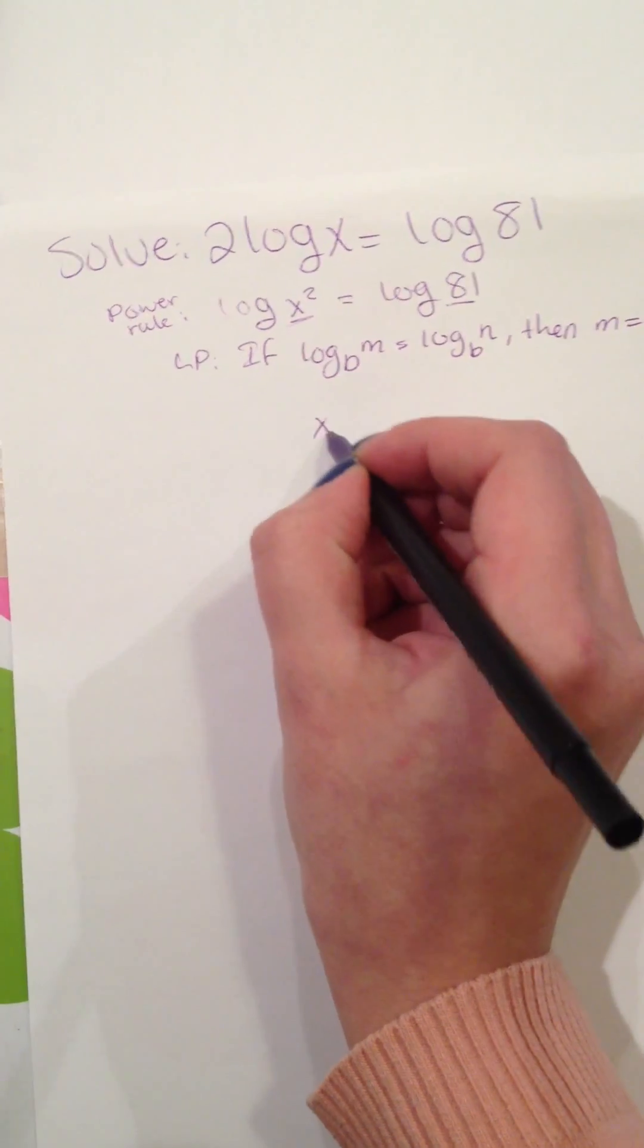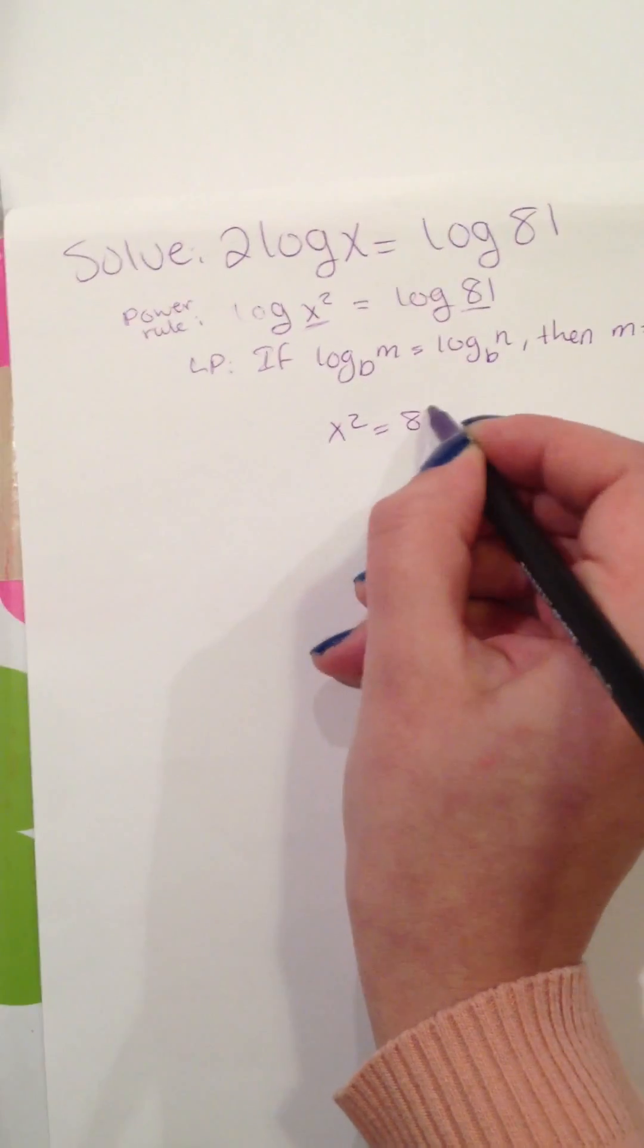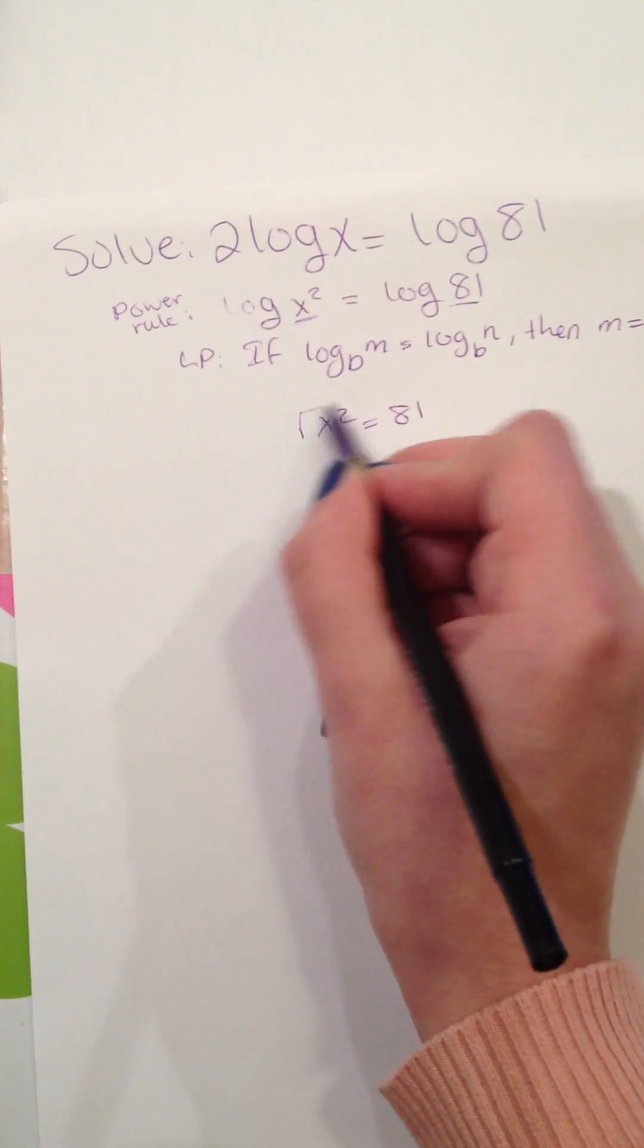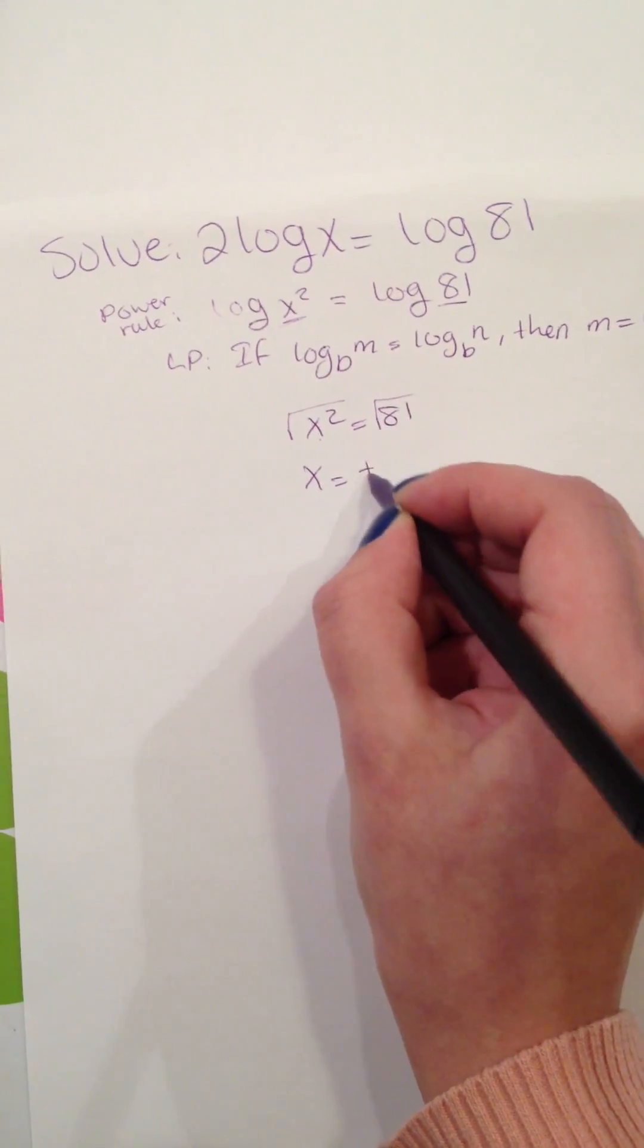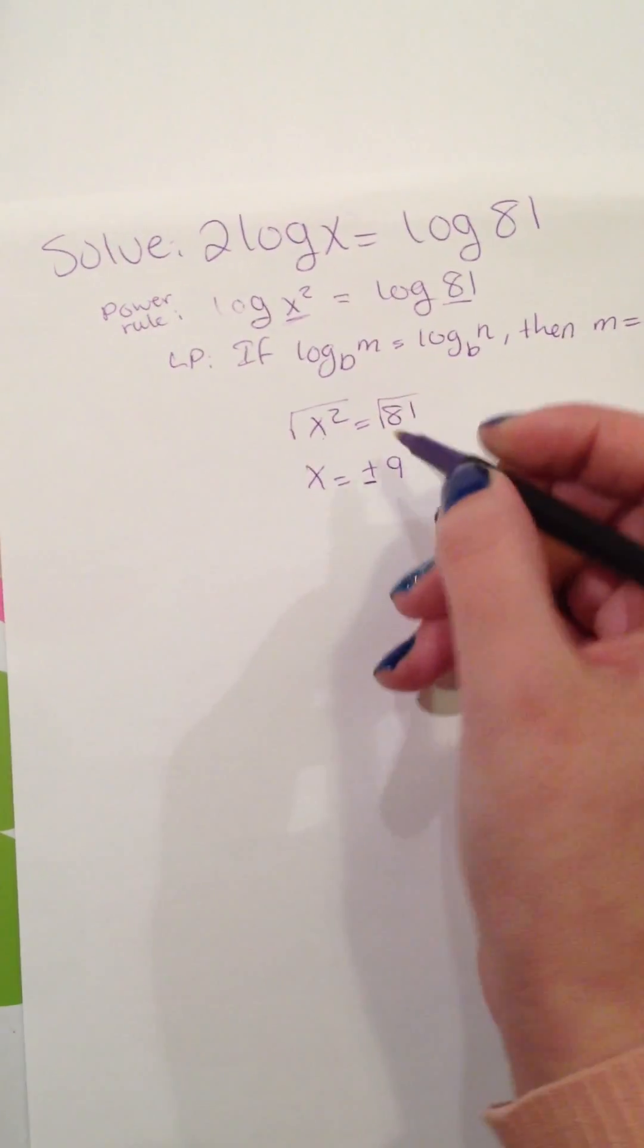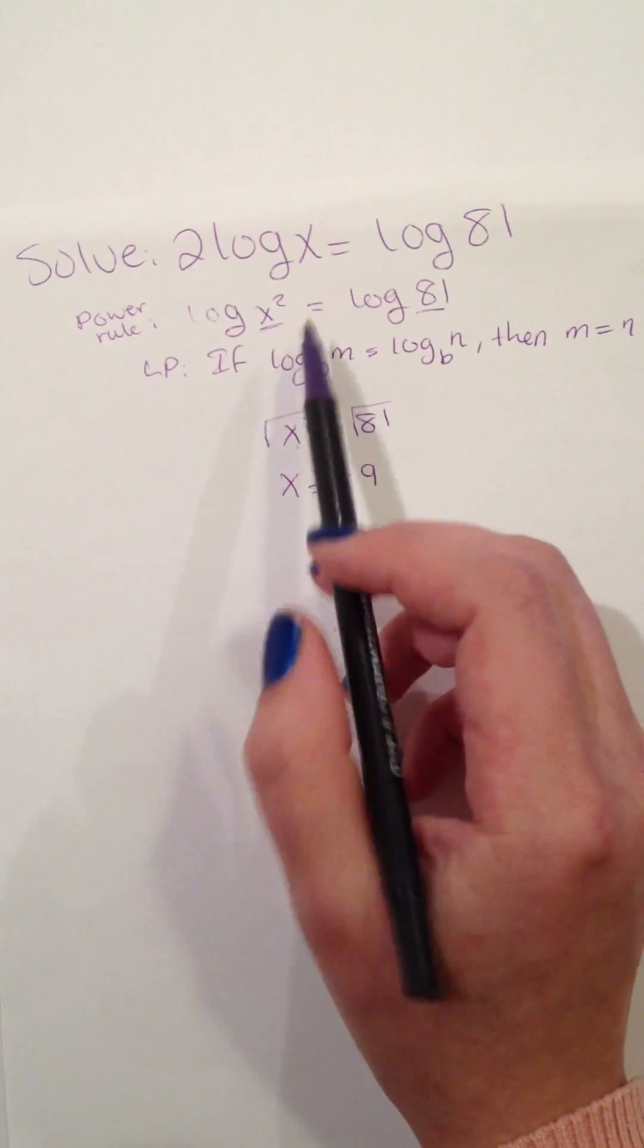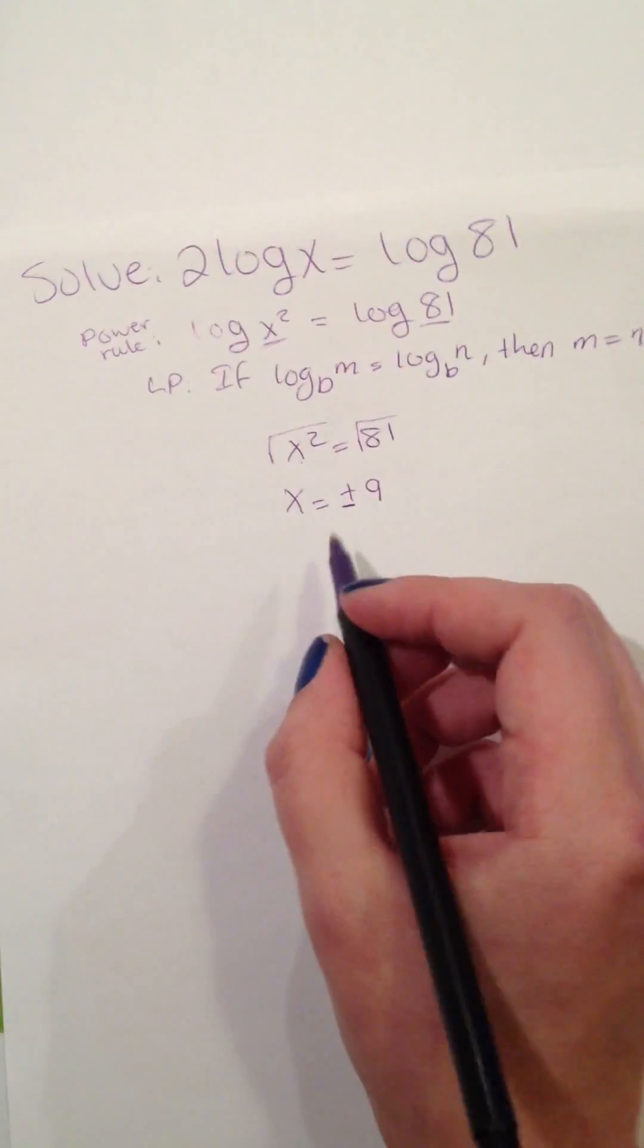I'm going to write it down: x² = 81. We're going to solve for x, so take the square root of both sides, and then x = ±9. But since our domain is x is greater than 0,